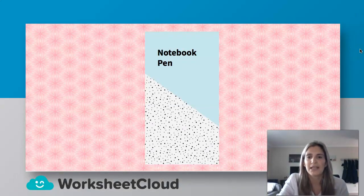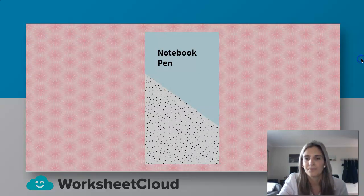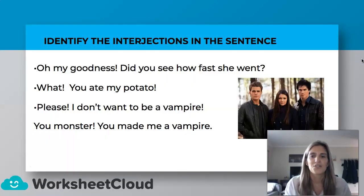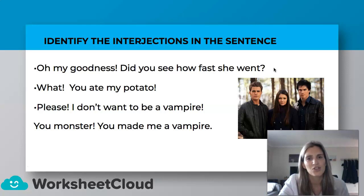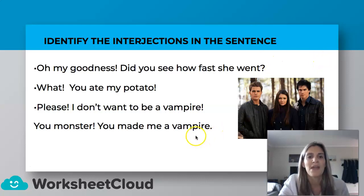Please grab your notebook and pen — we'll do a little activity. Identify the interjections in these sentences. You can pause this now to answer. The sentences are: "Oh, my goodness! Did you see how fast she went?" "What? You ate my potato?" "Please! I don't want to be a vampire." "You monster! You made me a vampire."